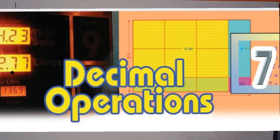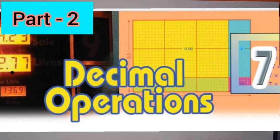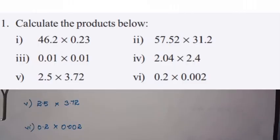Hi all, this is the second part of our decimal operations. Page 113 — we will discuss page 113. What is the first question? Calculate the products below. That is the multiplication. We will calculate the multiplication. How do we multiply the decimal numbers?